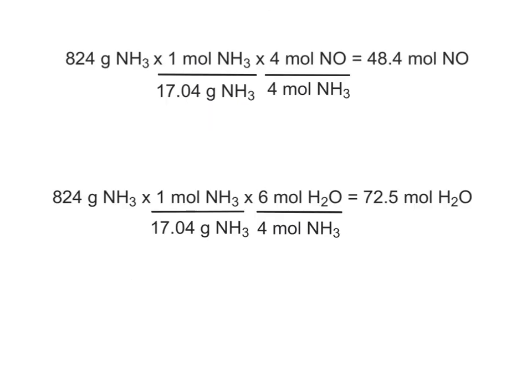Here are the correct solutions to the problem. 824 grams of ammonia will produce 48.4 moles of nitrogen monoxide and 72.5 moles of water. Make sure you have the correct work and answers in your notes.